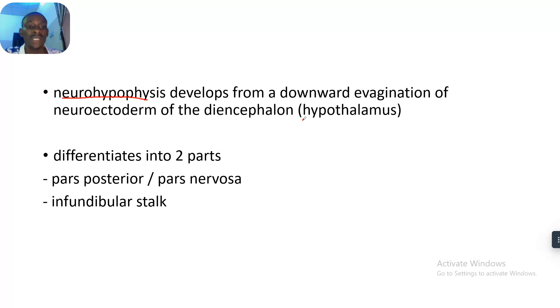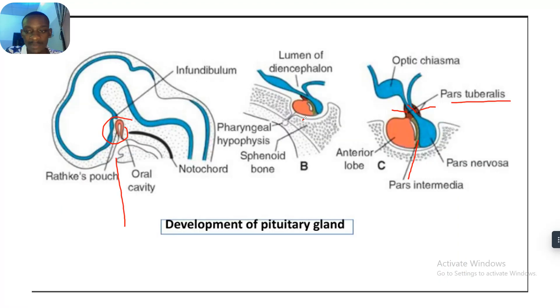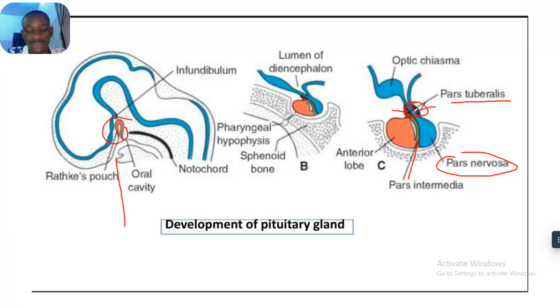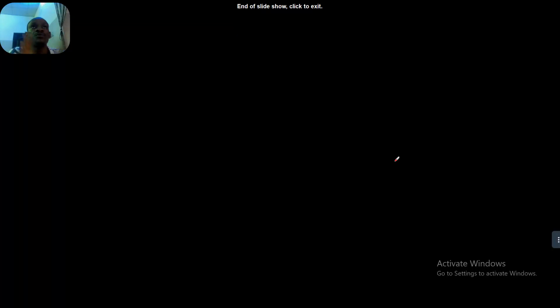The neurohypophysis differentiates into two parts: the pars posterior, also known as the pars nervosa, and the infundibular stalk. With that, we are done with the embryology of the pituitary gland. Do like our channel and stay tuned for more videos — bye for now.